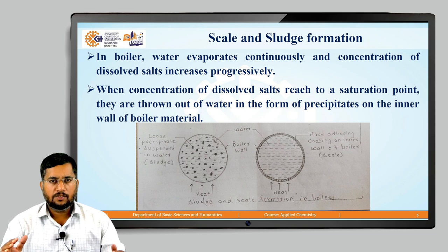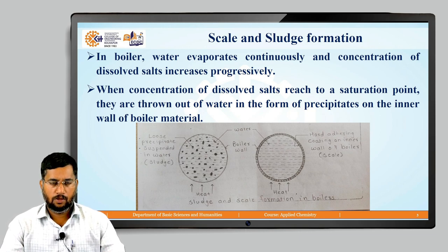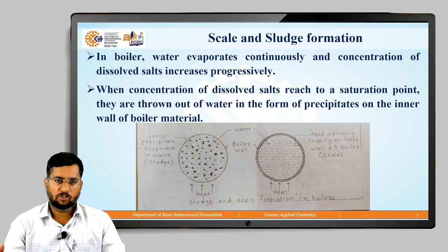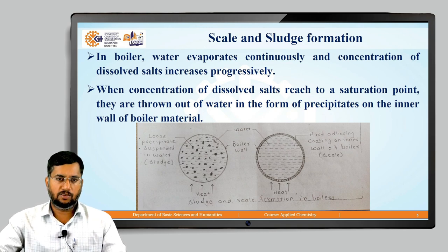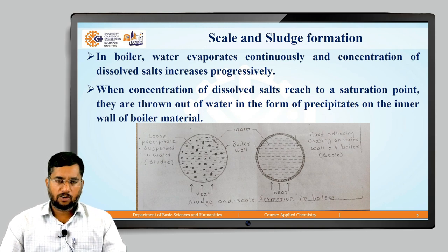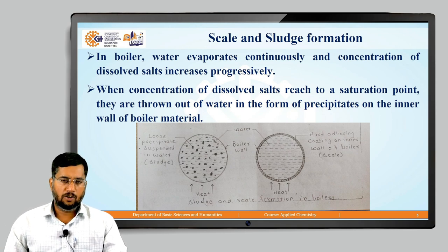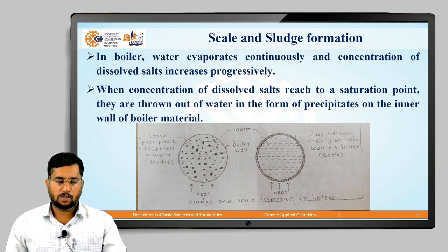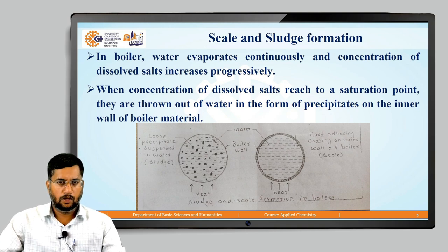Scale and sludge formation is due to dissolved salt impurities. In a boiler, as we provide water to produce steam, water evaporates continuously and the concentration of dissolved salt impurities increases progressively. When that concentration reaches a saturation point, the dissolved salts precipitate out and are deposited onto the inner wall of the boiler.